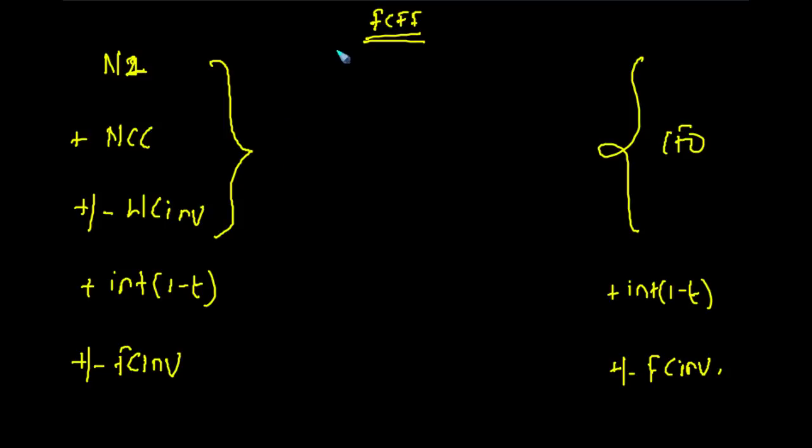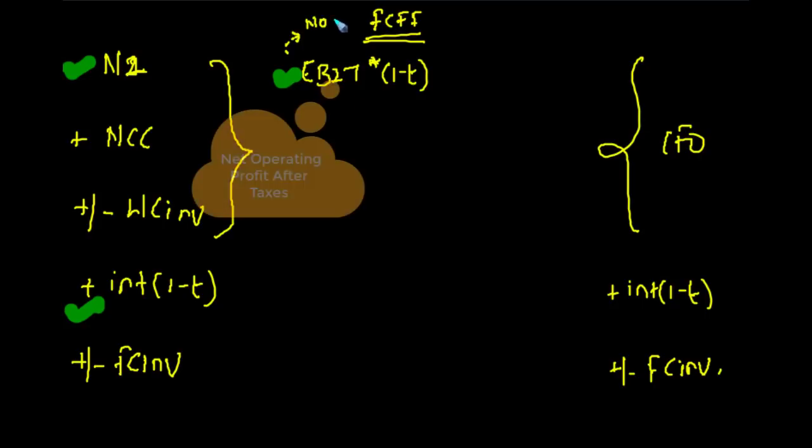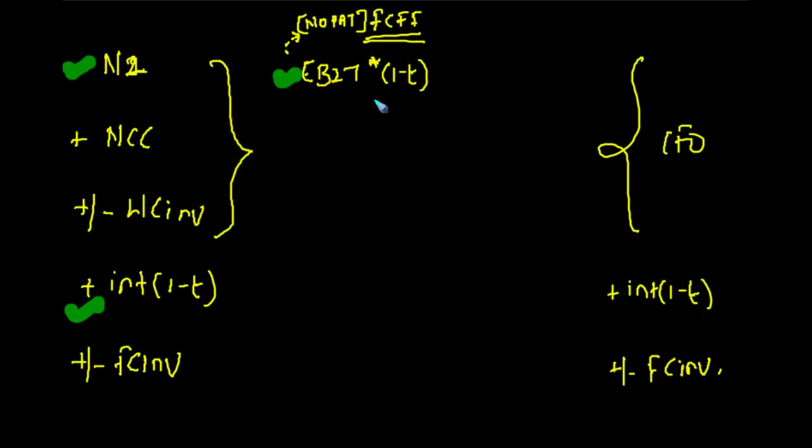Then one formula that starts with EBIT—we multiply that with one minus t. Now this number is same as net income plus interest into one minus t, so it is also called as NOPAT, net operating profit after taxes.